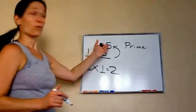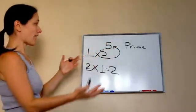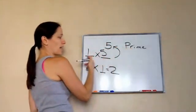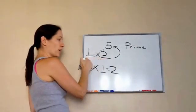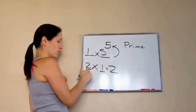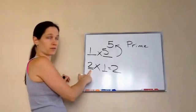So when we're talking about prime numbers, it's basically a number that only has two factors. One and itself. You got it?